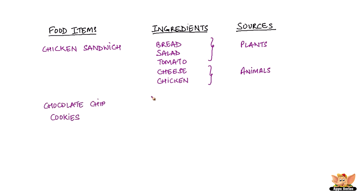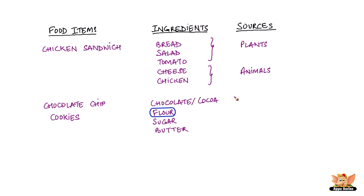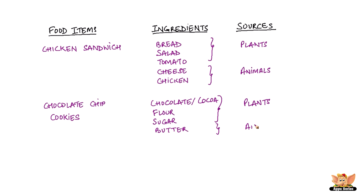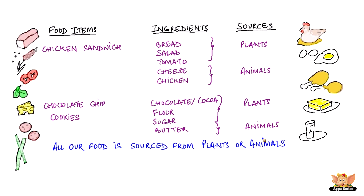Let's take chocolate chip cookies, for instance — something that all of you love so much. Chocolate, cocoa, flour, sugar, butter — that's what we need to make chocolate chip cookies. Here again, chocolate, flour and sugar are sourced from plants, while butter is made from milk, which comes from cow or buffalo. So you can see that all of our food is sourced either from plants or animals.